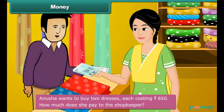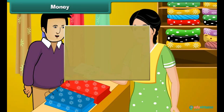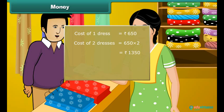Anusha wants to buy two dresses, each costing 650 rupees. How much does she pay to the shopkeeper? Cost of two dresses is equal to 650 × 2, which is 1,350 rupees. Anusha pays 1,350 rupees to the shopkeeper.